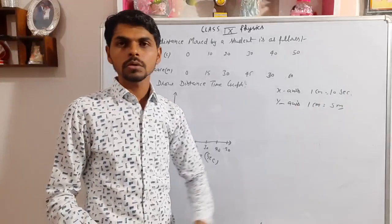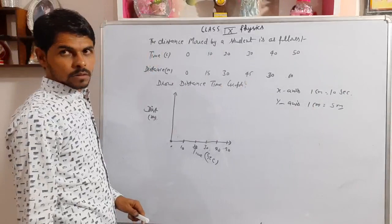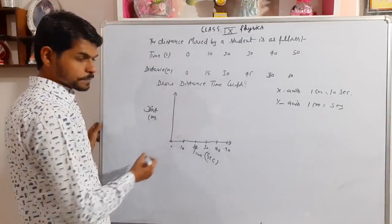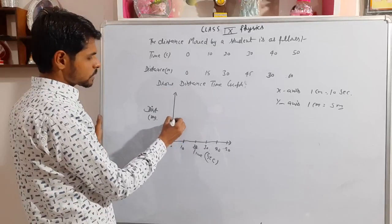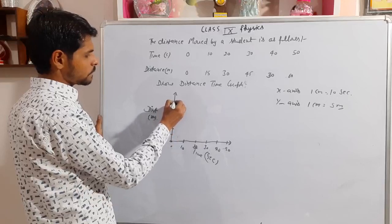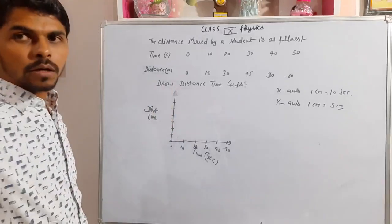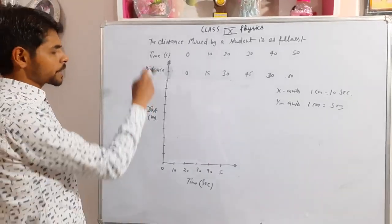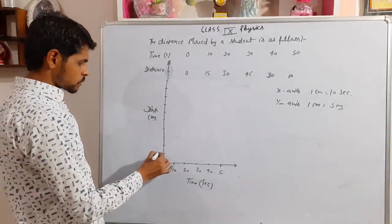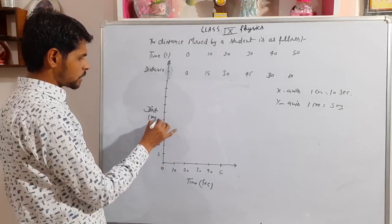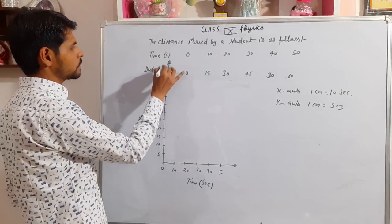On the y-axis, 1 cm equals 5 meters. Drawing the divisions: 0, 5, 10, 15, 20, 25, 30, 35, 40, 45, 50, 55, and 60 meters are marked. The graph is extended to accommodate all values up to 60 meters with 12 divisions.